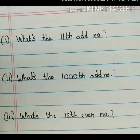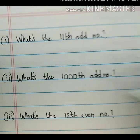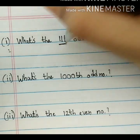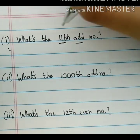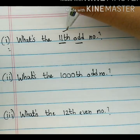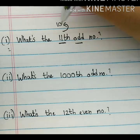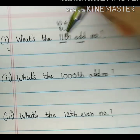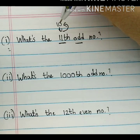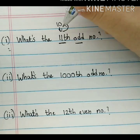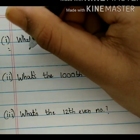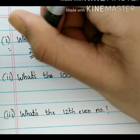The question says: what's the 11th odd number? All you need to do is subtract 1 from 11, that gives you 10, and add that answer — 10 — to 11. So 10 plus 11 is 21, and that's our answer.